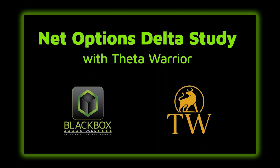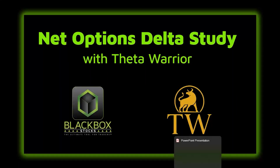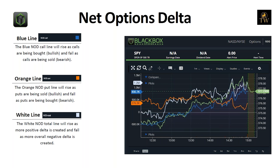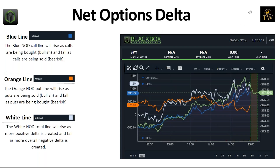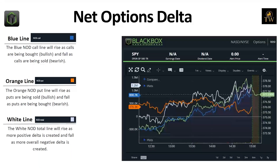We're going to look at what the Net Options Delta study is. We put together a presentation about it. We have three different lines on this study: a blue line, an orange line, and a white line. The blue line represents the call delta, the orange line represents the put delta, and the white line represents the total net options delta. Calls have inherently positive delta, so as more positive delta is introduced into the market, that blue line will rise, and as calls are sold, the blue line will fall.